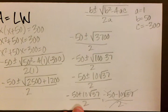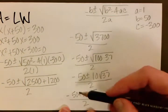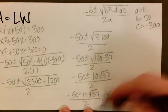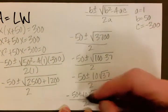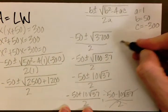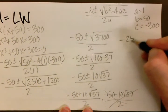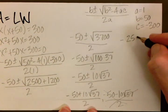So we're just left with the positive. We can do some simplification here because of our dividing by 2. So negative 50 divided by 2 is negative 25, and 10 divided by 2 is 5.